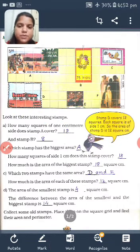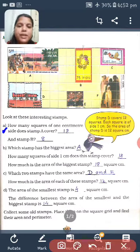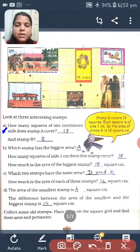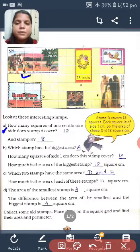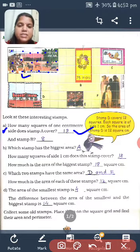Let's solve the answer of the given questions. The first one: How many squares of one centimeter size does stamp A cover? So can you tell me how many squares are covered by A? You can count it. 1, 2, 3, 4, 5, 6, 7, 8, 9, 10, 11, 12, 13, 14, 15, 16, 17, 18. So the answer is 18. Eighteen squares are covered by stamp A.